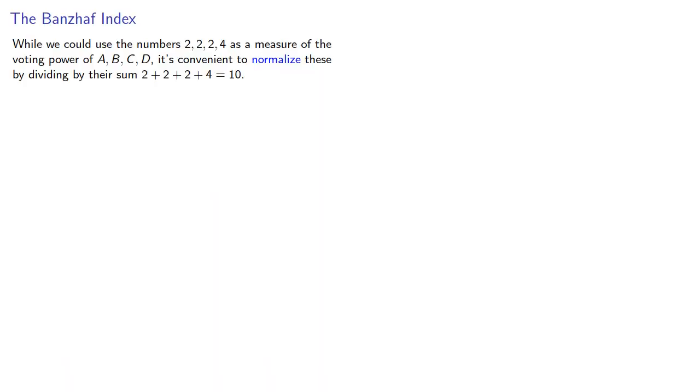While we could use the numbers 2, 2, 2, and 4 as a measure of the voting power of A, B, C, and D, it's convenient to normalize these by dividing by their sum, 10.